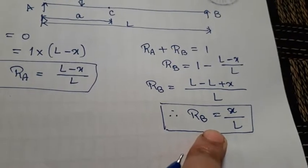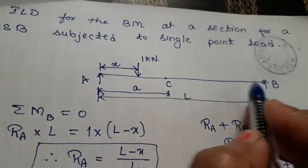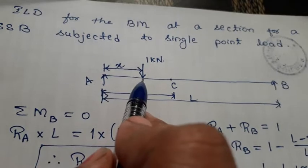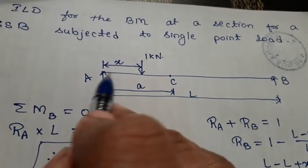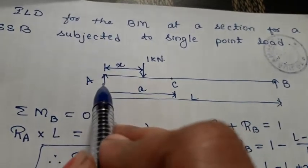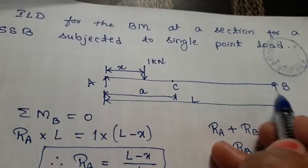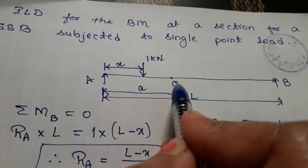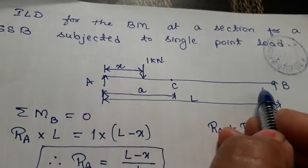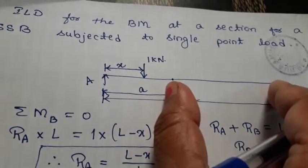After calculating the reactions, we have two portions: one is AC and one is CB. The load is moving from A to C and then C to B — first in the portion AC and then in the portion CB when it passes point C. These are the two conditions: load in AC portion and load in CB portion.